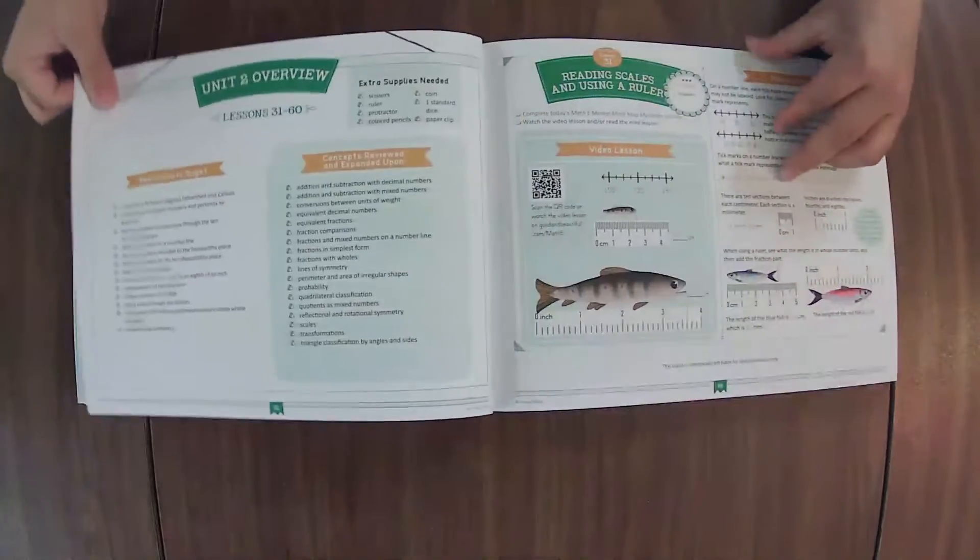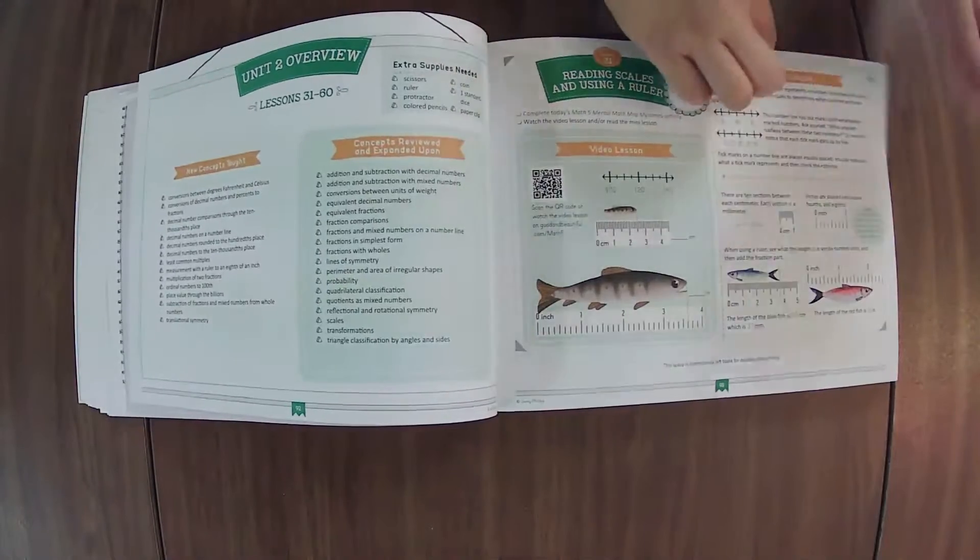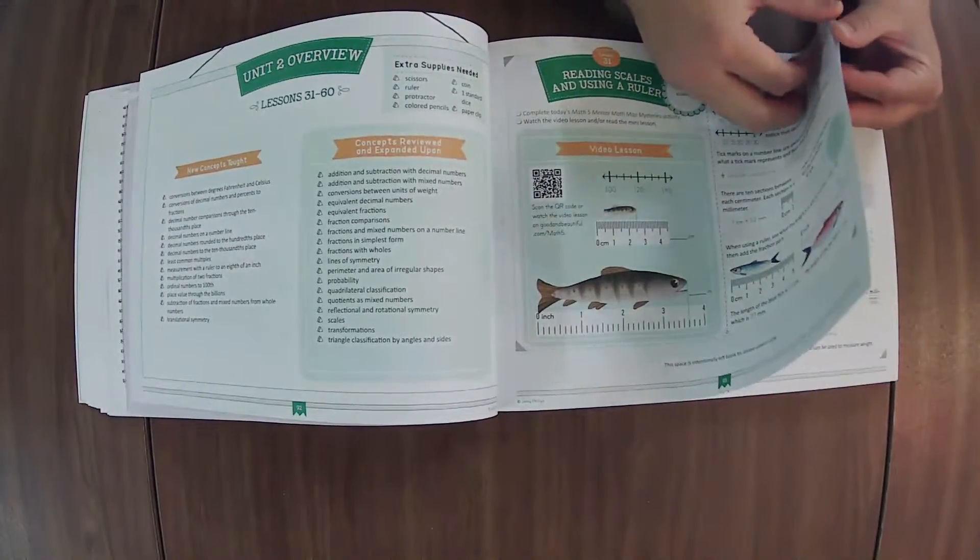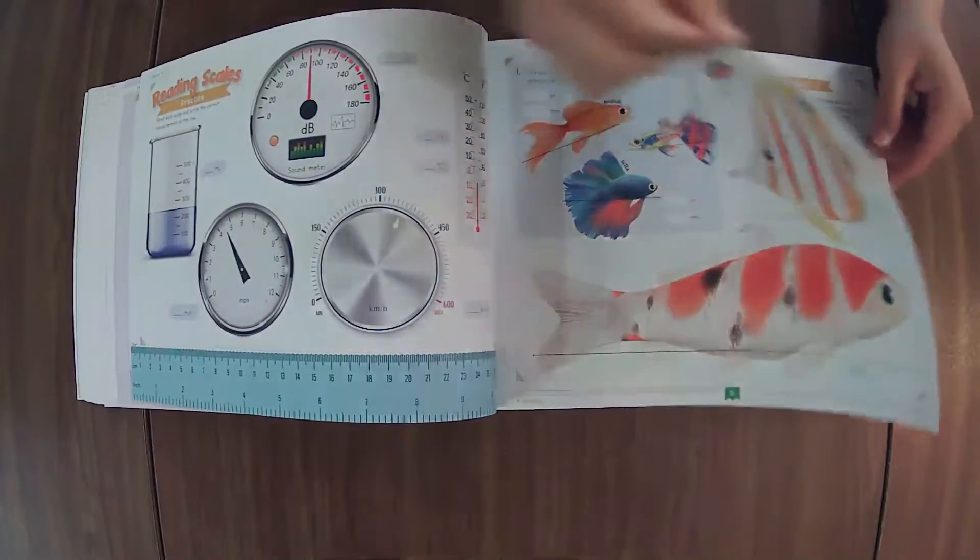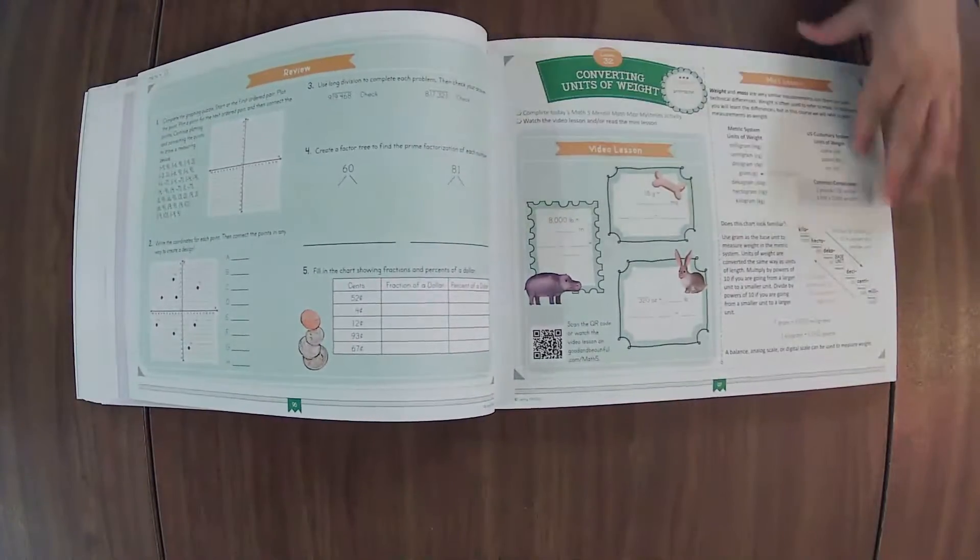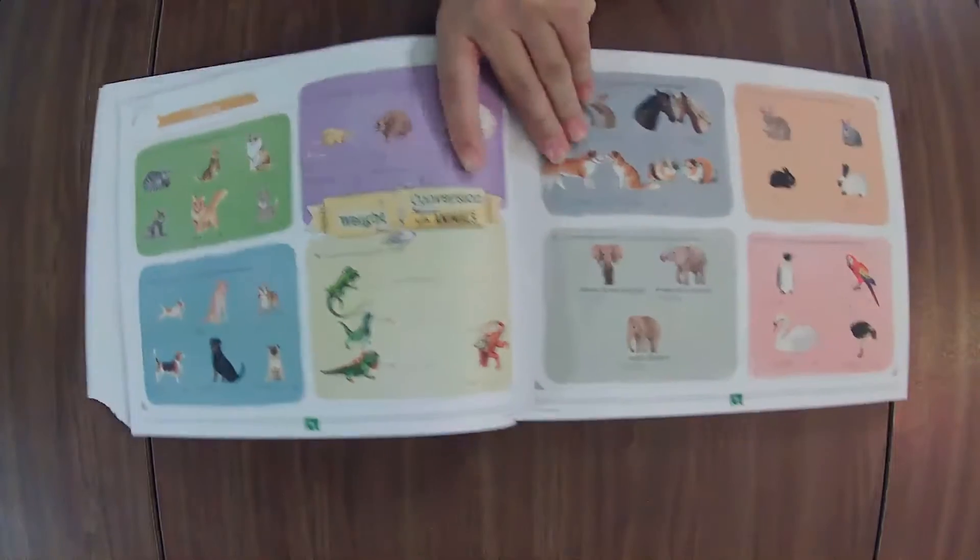Or if they're not, depending on what it is, maybe look ahead and see if that concept is covered enough in the review to determine what you feel is best for them. So unit two is lesson 31 through 60. We've got some fish in that lesson so this does not seem to be geographical.